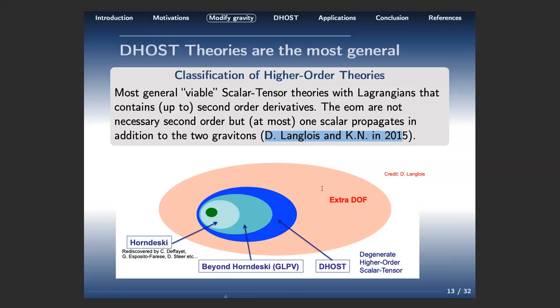In the DHOST picture, the green area corresponds to usual Brans-Dicke theories, then Horndeski gives a larger class containing the cubic Galileon and all Horndeski Lagrangians. Beyond Horndeski theories discovered by Gleyzes et al. were then incorporated. We can put all these into one big class called DHOST — Degenerate Higher-Order Scalar-Tensor theories. If you are not in the DHOST class, you propagate an extra degree of freedom: a ghost, making the theory not physically viable.